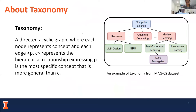First, I will introduce the definitions of our taxonomy. A taxonomy in general is a directed acyclic graph, where each node represents a concept node, and each edge — the parent node and child node pair — represents a hierarchical relationship in the taxonomy. This relationship expresses that the parent node is the most specific concept that is more general than the child node. Here is an example of the taxonomy from the Microsoft Academic Graph computer science dataset, representing the hierarchical relationship between concept nodes in the CS domain.